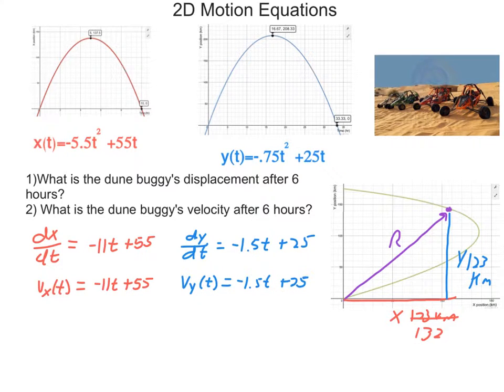Now once again, I'm looking for not just the velocity in the x-axis or the y-axis, I'm looking for the actual velocity. But I'll get my x component from my x-axis equation, I'll get my y component from my y-axis equation. So let's substitute in six hours in both, get my components, and use Pythagorean theorem to combine them.